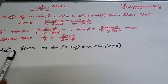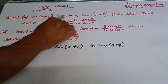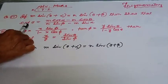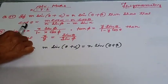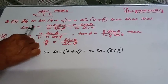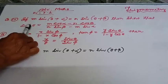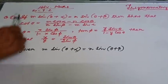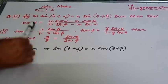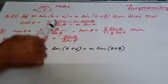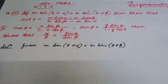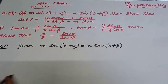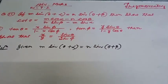What are we given here? We are given m·sin(θ + α) = n·sin(θ + β). We need to convert this expression to get cot θ. We need to convert theta from this given condition.